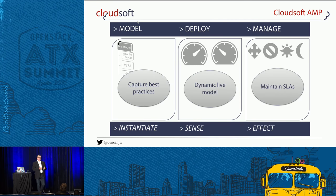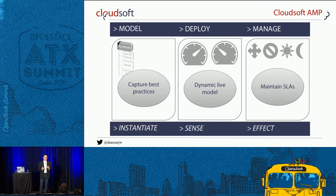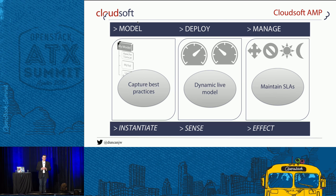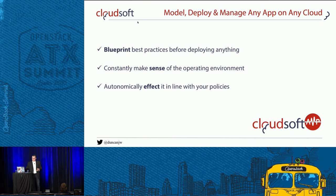What does that mean? It means you model your application — you create a blueprint for it. That blueprint gives you all the essential ingredients to understand how to deploy an application on any underlying infrastructure, and also how to manage it on an ongoing basis. That's where autonomics kicks in: you don't just instantiate an application and walk away, but constantly monitor it, sense its performance, take sense data from it, and react to change its behavior. The monitor, analyze, plan, and execute autonomic control loop is at the heart of what we're doing.